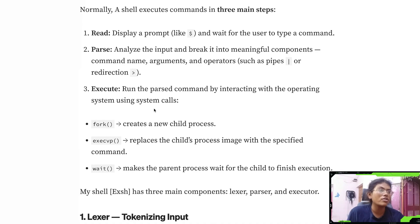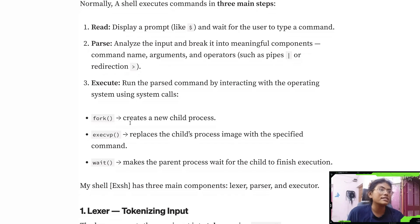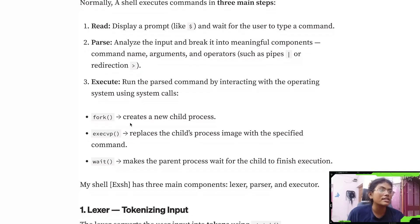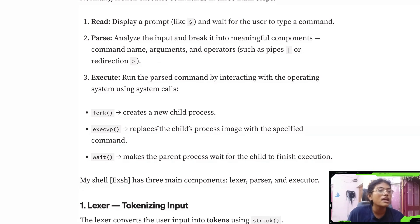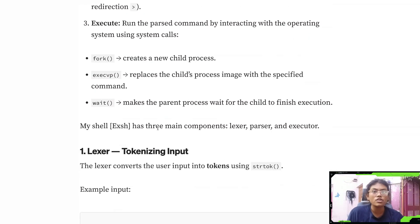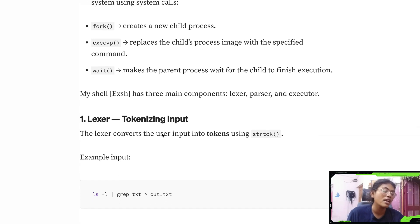In the execution step we have three main system calls. The first is fork, the second is execvp which creates the child process image, and the third is wait, which is for the parent process to wait for the child process to complete.